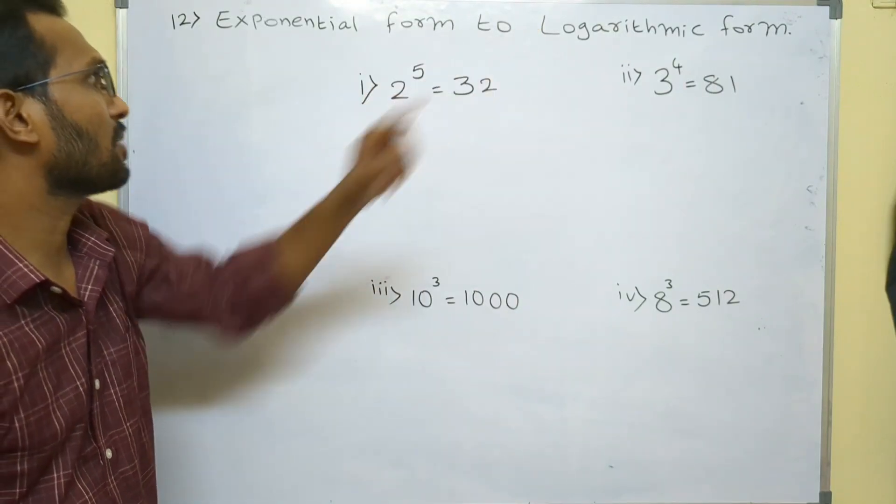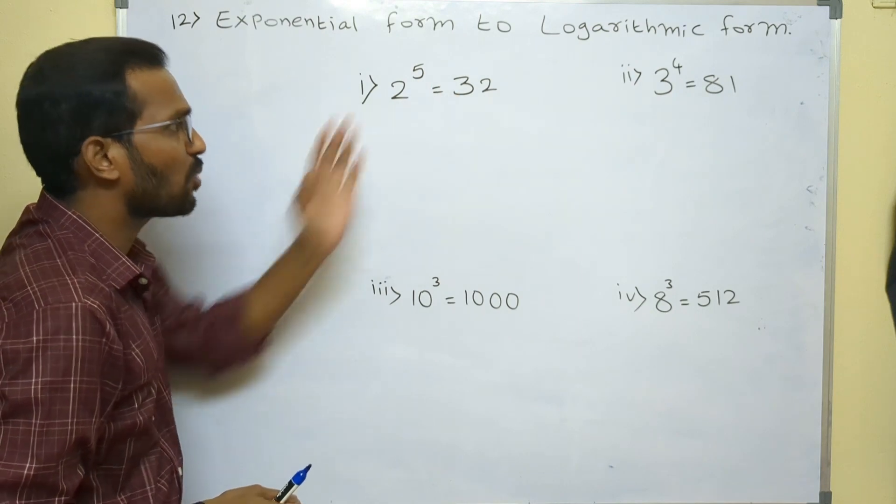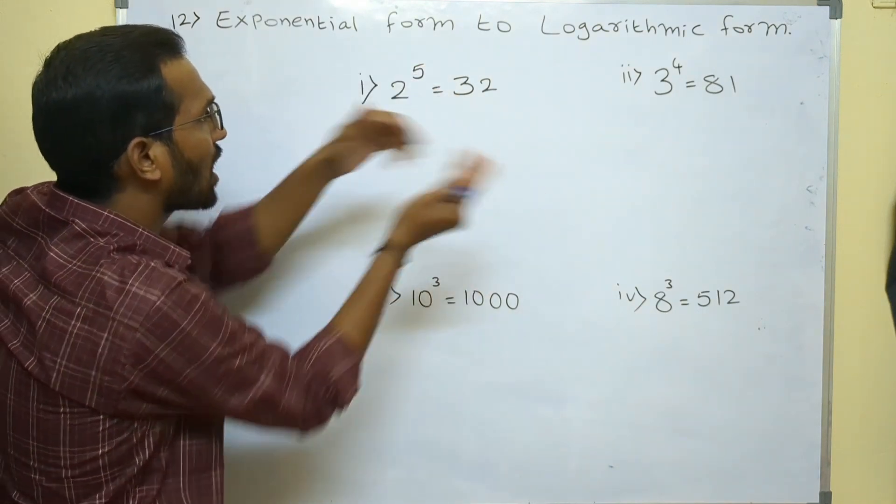Convert exponential form to logarithmic form. 2 power 5 equals 32. This is in the form of an exponent. We need to convert this to logarithmic form.